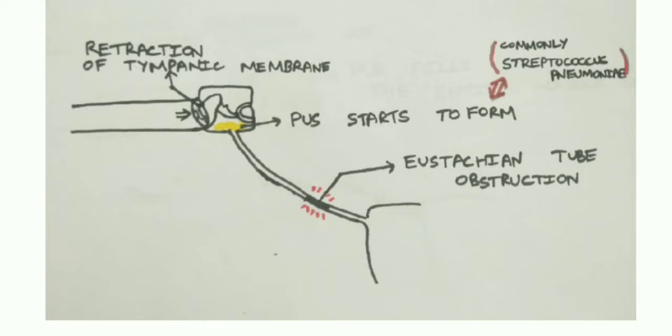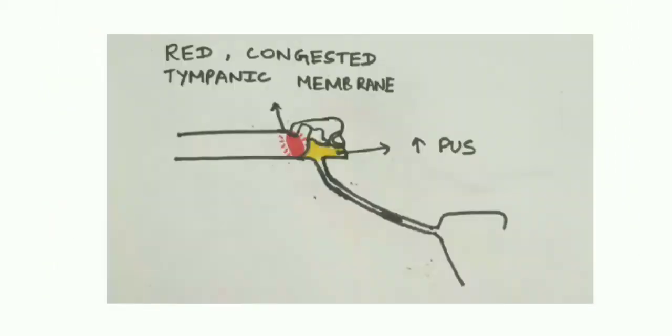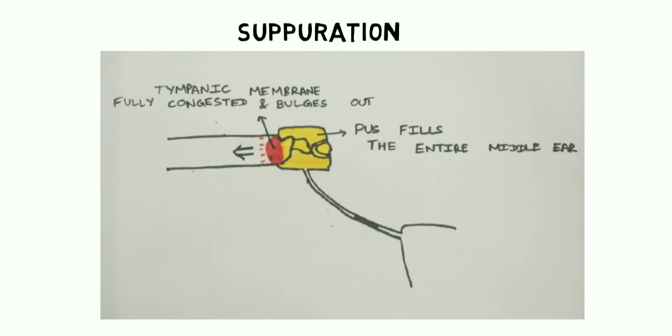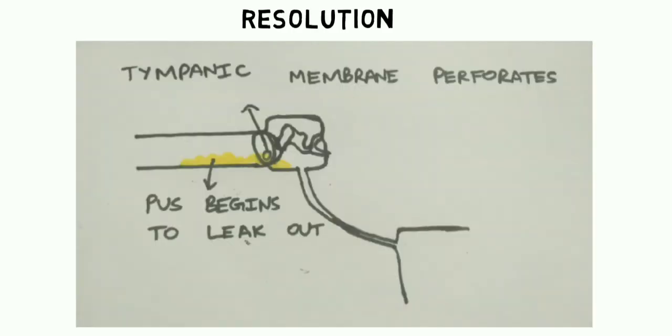Pus starts to form, and in the next stage pus builds up even more and the tympanic membrane appears red and congested. In the stage of suppuration, the pus fills almost the entire middle ear and the tympanic membrane is fully congested and bulges out.